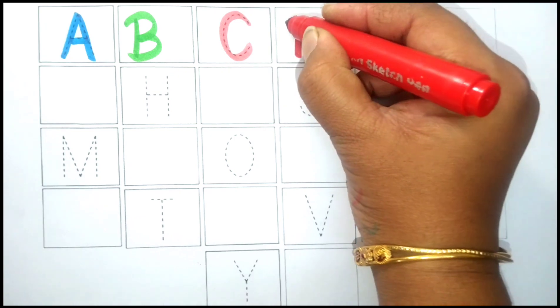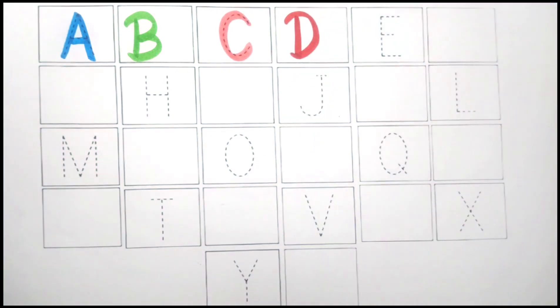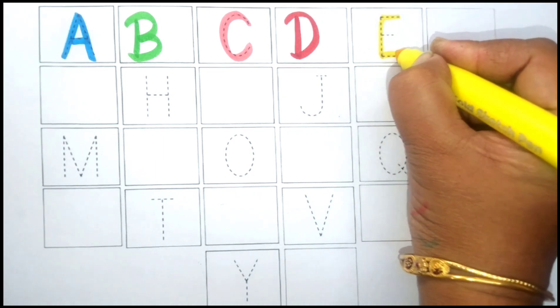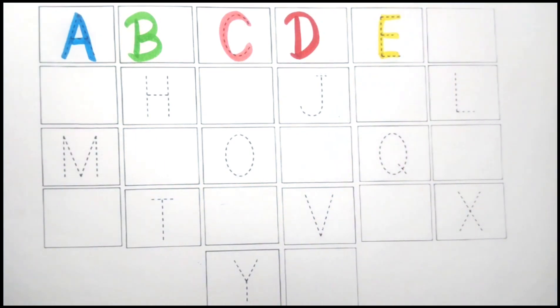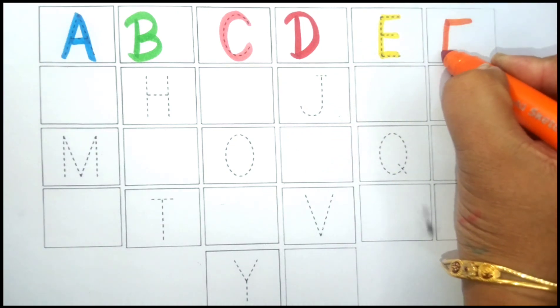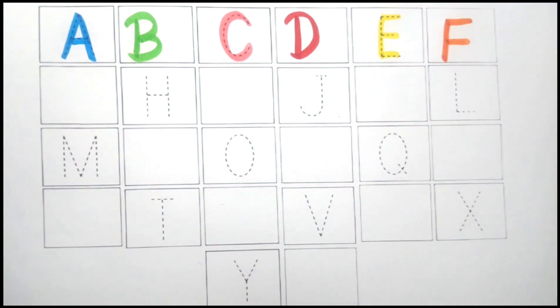Red color D. D for dog. Yellow color E. E for elephant. Orange color F. F for fish.